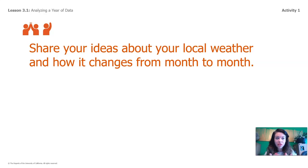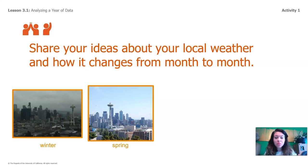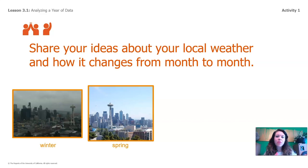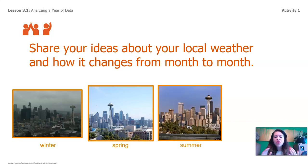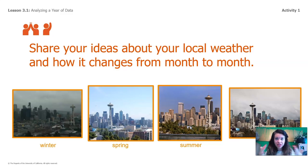Did you think about the different types of weather you experience over different seasons where you live? Here in Seattle, we have very dark, cool, rainy winters — it rains almost every day, but it never really snows. In the spring, we get kind of a mix of cool days, some sunny and some rainy. In the summer, it's beautiful, sunny, and warm — it doesn't really rain very much. And in the fall, we have cool, gray, rainy weather. So we have a lot of different types of weather in Seattle.